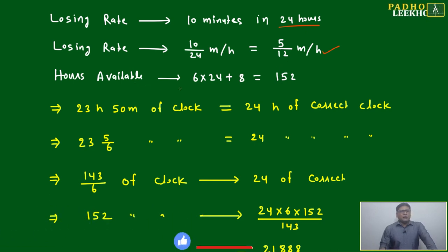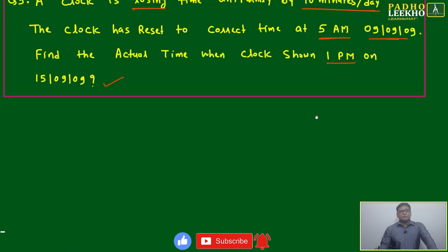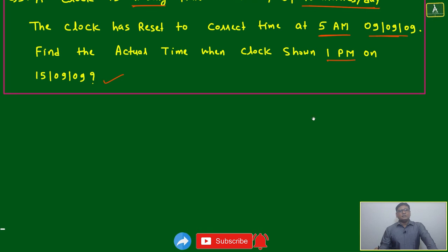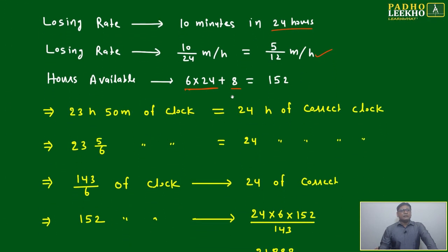How many hours available between 9th to 15th? 6 complete days plus 8 hours extra. Always keep in mind, it's 5 AM here and 1 PM there, so 6 days plus 8 hours from 5 AM to 1 PM equals 152 hours.